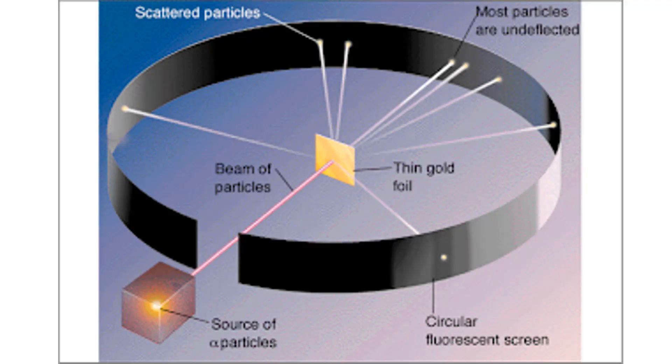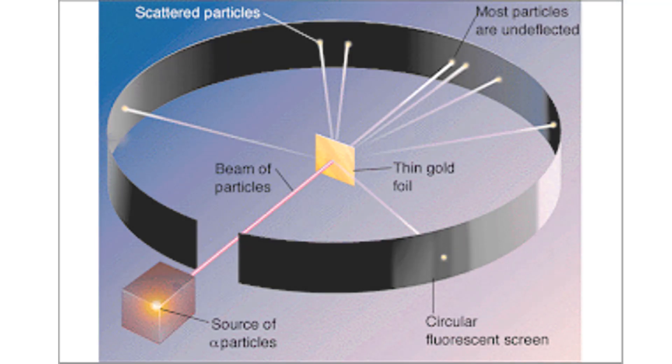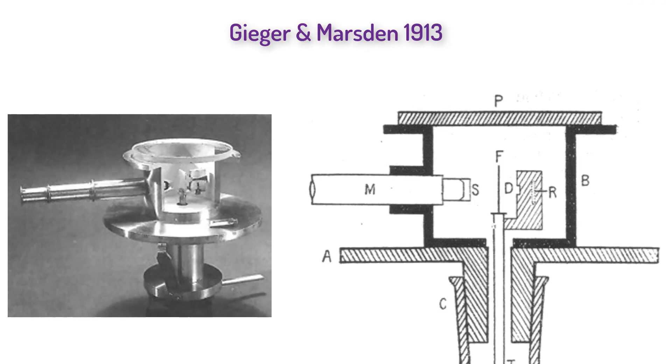Back in 1913, Geiger and Marsden did conduct a gold foil experiment, although it wasn't done with a wraparound screen, but instead a microscope coated with a screen that could be moved in the full circle. That gold foil experiment validated Rutherford's conclusions and proved that the nucleus was positive, something that Rutherford was pretty convinced about, but it was nice to have validation.